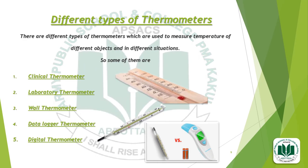Now we have different types of thermometers. We will see how many types there are and the use of these different types. There are different types of thermometers used to measure the temperature of different objects and in different situations. Some of them are: number one, clinical thermometer; number two, laboratory thermometer; number three, wall thermometer; number four, data logger thermometer; and the last one is digital thermometer.